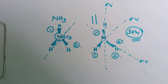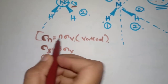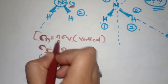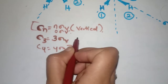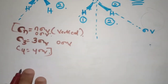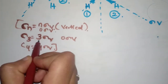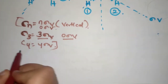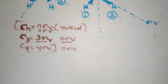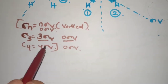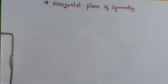Here is a short trick for counting vertical planes of symmetry: if C_n is the principal axis, then there are either n sigma_v planes or zero sigma_v planes. For example, if C3 is present, there will be three or zero sigma_v planes; if C4 is present, there will be four or zero sigma_v planes.